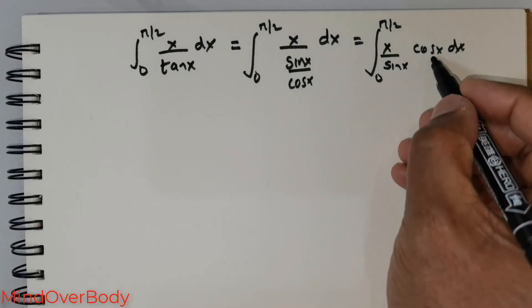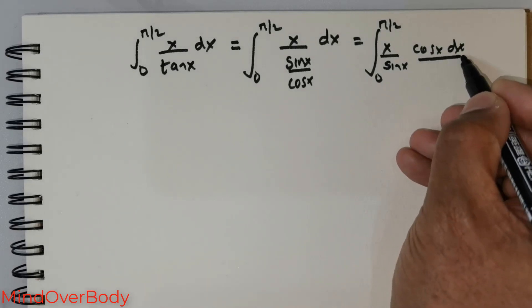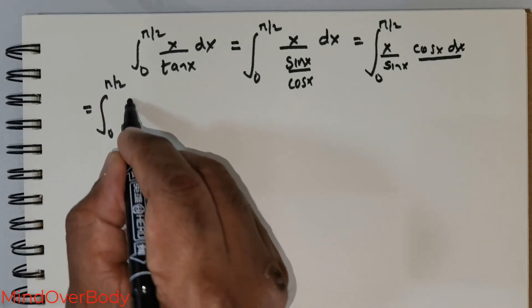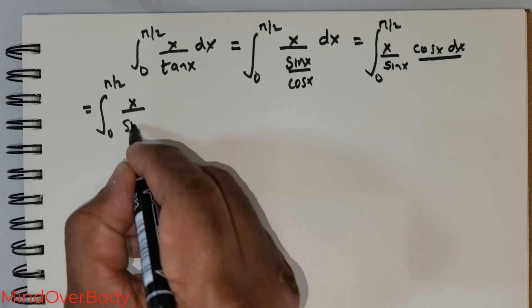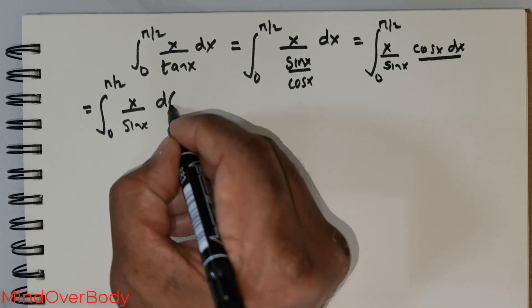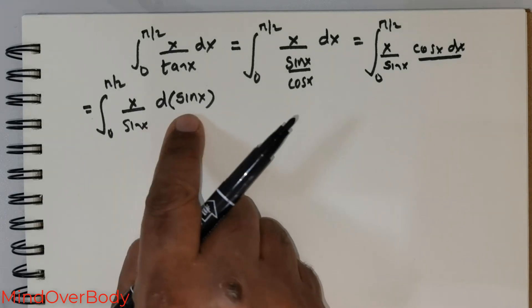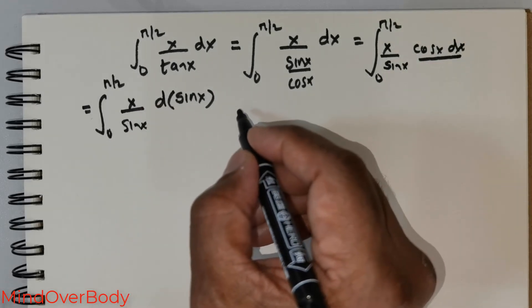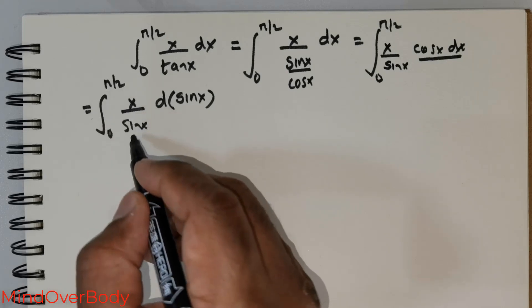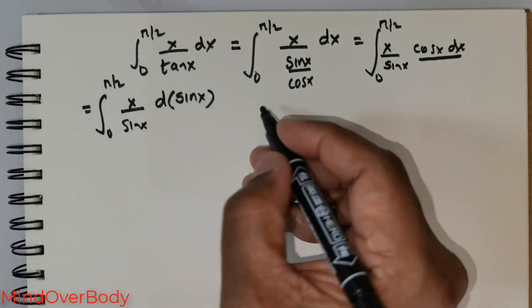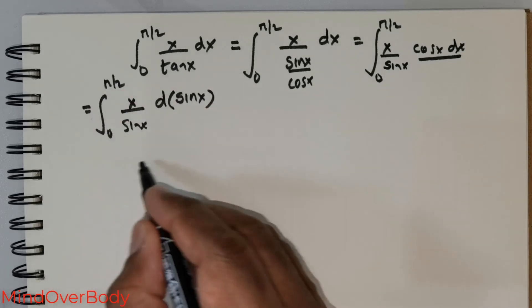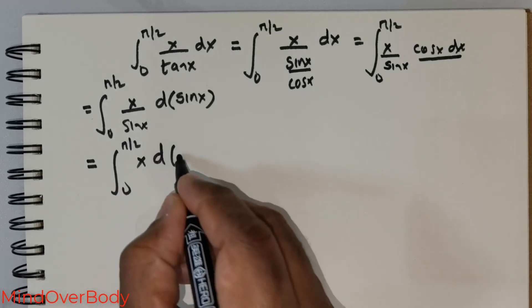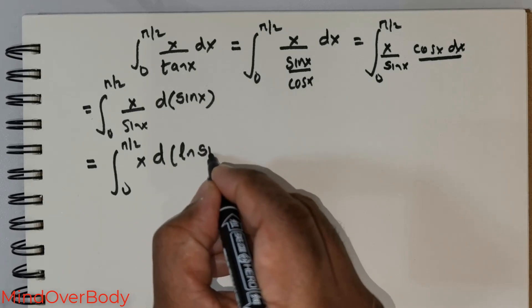Now what I wish to do is rewrite cos(x) dx as d(sin x). So the integral becomes integral from 0 to π/2 of x over sin(x) times d(sin x). This can further be rewritten as integral from 0 to π/2 of x times d(ln sin x).